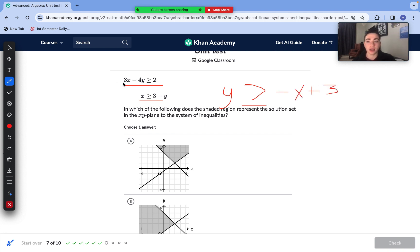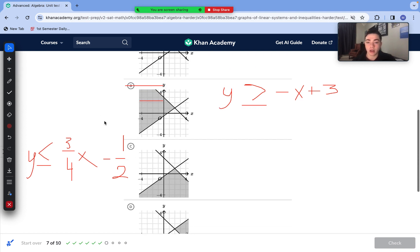First step with our first equation is to just minus 3x from each side. We have -4y ≥ -3x + 2. Now to isolate our y, we need to divide both sides by -4. Whenever we multiply or divide by a negative, our inequality sign switches. So now we have y ≤ 3/4x - 1/2. We're going to see which graph matches our lines.